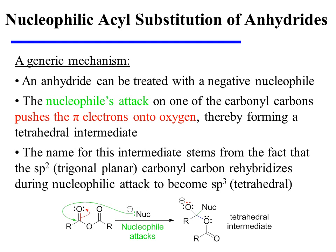An anhydride could be treated with a negative nucleophile. The nucleophile's attack on one of the two carbonyl carbons will push that carbonyl's pi-bonding electrons onto oxygen as a lone pair, thereby forming a tetrahedral intermediate. Recall that the name for this intermediate stems from the fact that the sp2-hybridized, or trigonal planar carbonyl carbon, rehybridizes during nucleophilic attack to become sp3-hybridized, or tetrahedral.